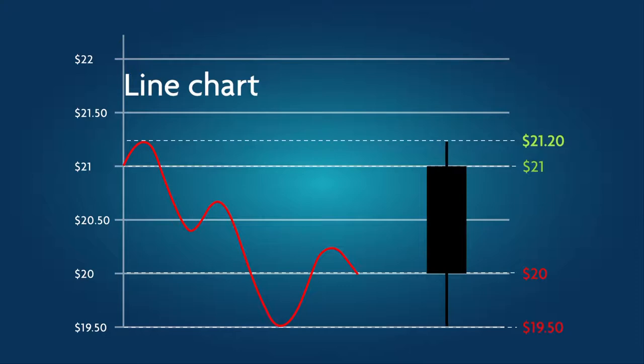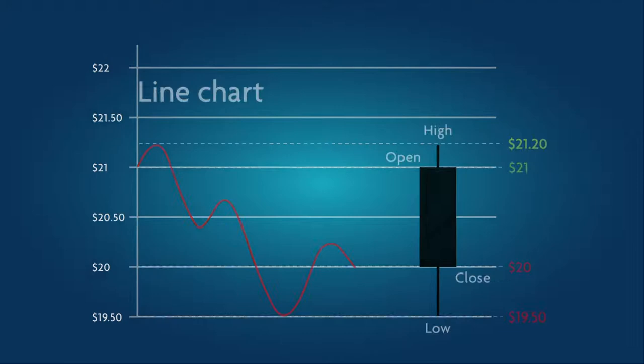Returning to the candlestick, we see a black-filled body, which means that the price closed down for the day. Because the candle is black, we immediately understand that the opening price is represented by the top of the body, the closing price is marked by the bottom of the body, and that the two tails, topping and bottoming, show the day's high and low.